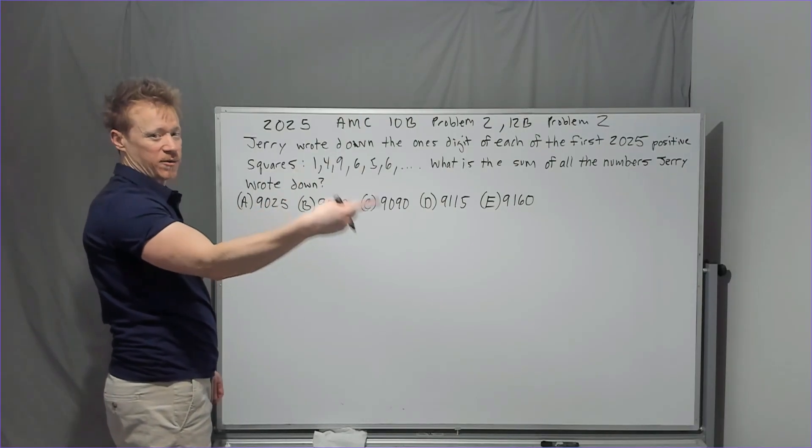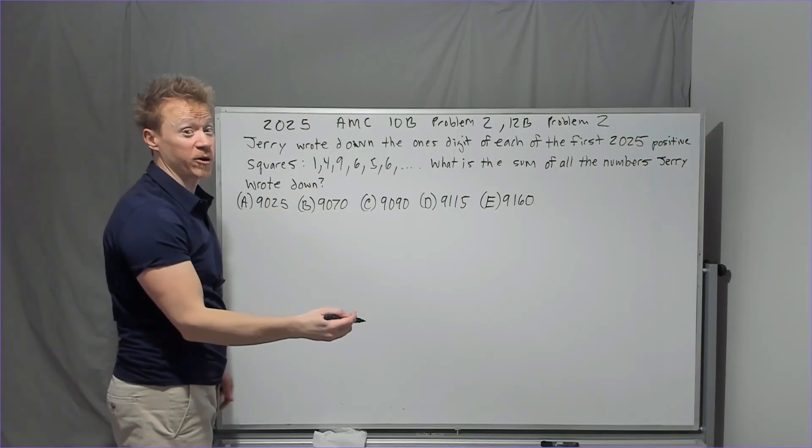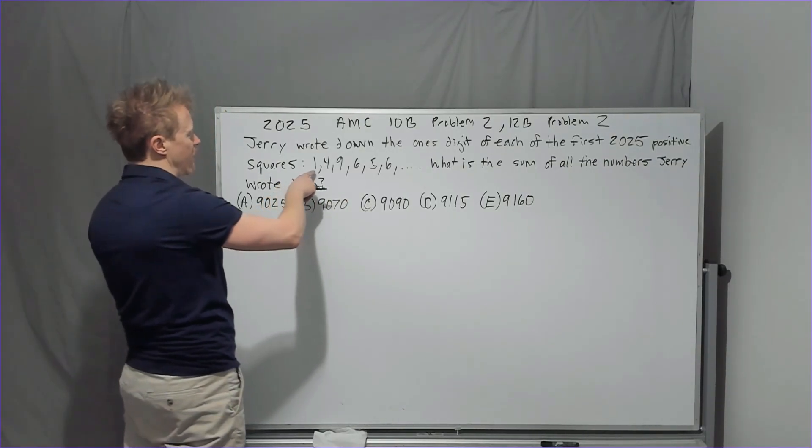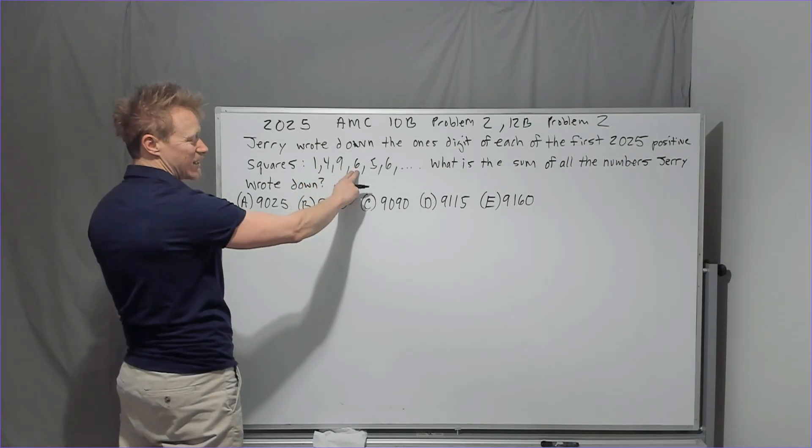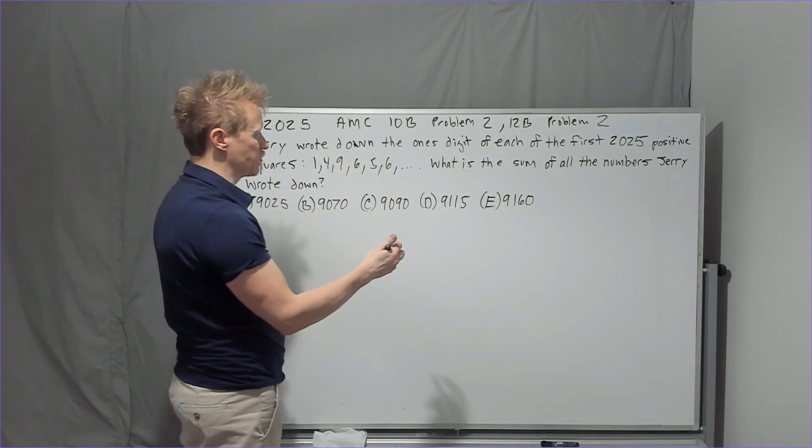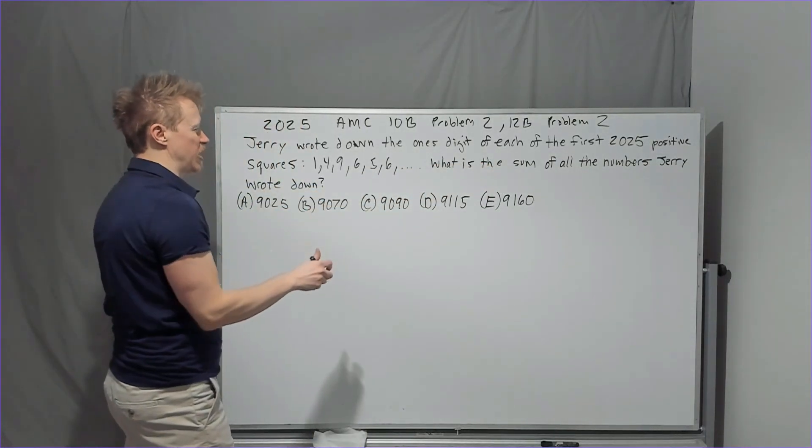So 2025 AMC 10B problem two, 12B problem two, Jerry wrote down the ones digit of each of the first 2025 positive squares. So one squared, two squared, three squared, all the way to 2025 squared. You're not stopping at 45 squared. That's not what they're saying. Make sure you grasp that difference. So it's 1, 4, 9, 16, but only the 6, 25, but only the 5, 36, but only the 6. What is the sum of all the numbers Jerry wrote down?